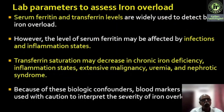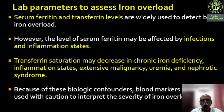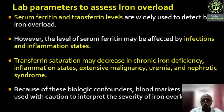Lab parameters like serum ferritin and transferrin levels are widely used to detect iron overload. When a patient comes, first the hematologist assesses and then sends to us. Serum ferritin more than 270 nanograms per mL indicates some form of iron overload. However, if serum ferritin is elevated, it is not purely because of iron overload — as we saw in the COVID pandemic, serum ferritin and LDH are inflammatory markers. Serum ferritin can be increased in all kinds of inflammation, so it is not a great modality to pick up iron overload status and has a lot of false positives.